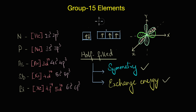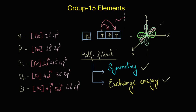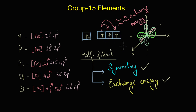Electrons in these degenerate orbitals can exchange with each other, but remember — only two electrons of the same spin can exchange their positions. In the process, they release energy, which is called the exchange energy. More such exchanges means greater energy released and greater stability.